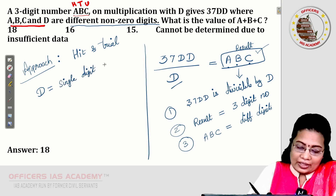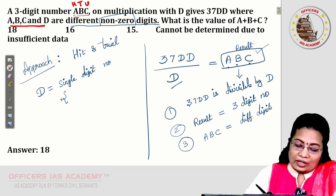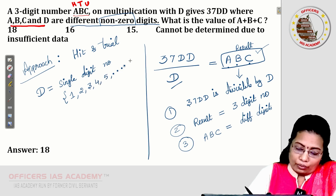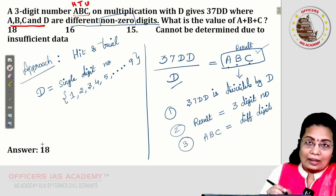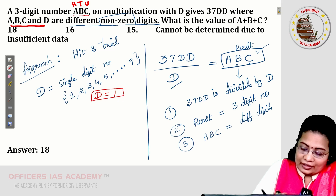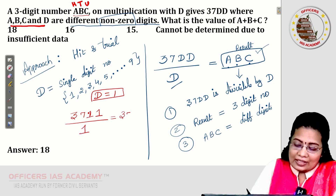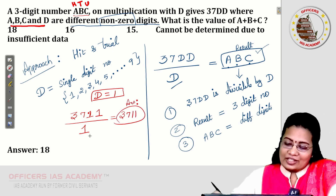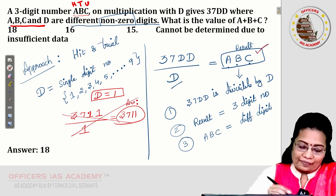Starting with D = 1: 3711 divided by 1 gives 3711, a four-digit number. But we need ABC to be a three-digit number, so we eliminate D = 1. Second trial with D = 2: 3722 divided by 2 gives a four-digit result. So option D = 2 is also eliminated.